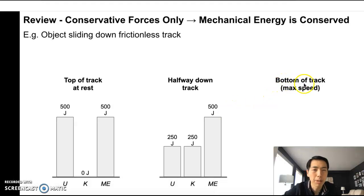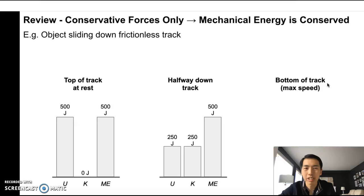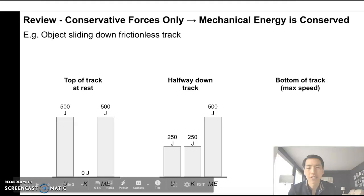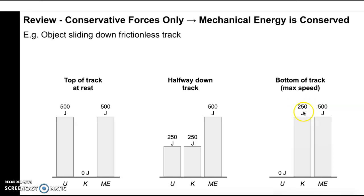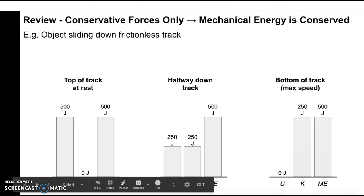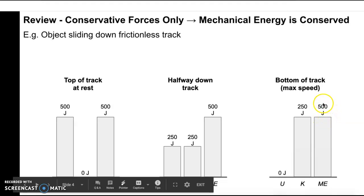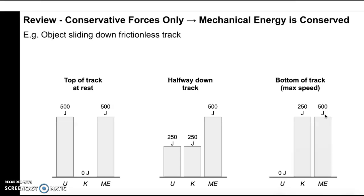Now we'll go down to the bottom of the track. When it reaches the bottom, right before it hits the ground, that's when it's traveling the fastest. All of the gravitational potential energy has now turned into kinetic energy. There's a typo — this should say 500. The gravitational potential energy has gone down to zero, and kinetic energy has raised all the way up to 500. The total of 500 stays the same throughout. That's what we talked about last week, when mechanical energy is conserved.